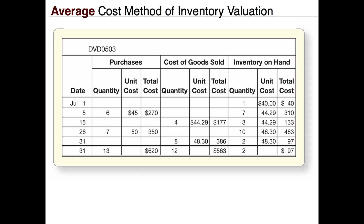Total cost of goods sold for the period: we sold 12 items at $563, and total purchases were 13 items at $620. Keep in mind if you're doing all three methods — FIFO, LIFO, and weighted average — LIFO gives you the greatest cost of goods sold, FIFO gives you the least, and weighted average should fall somewhere right in between those two.